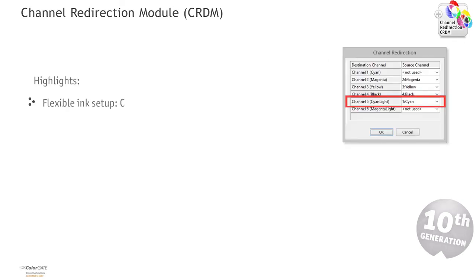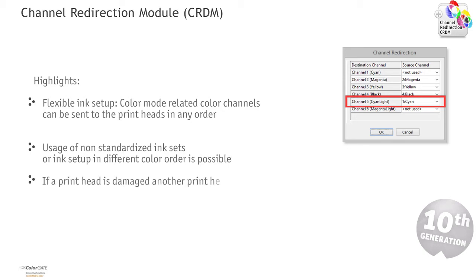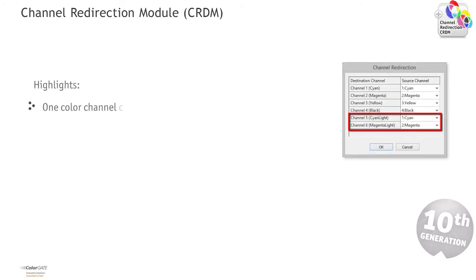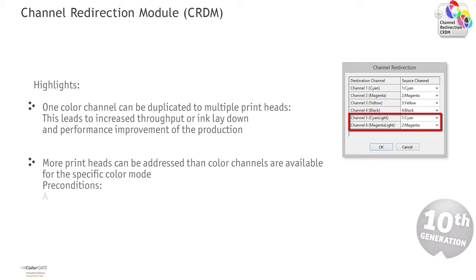On the one hand, there is the possibility of flexible ink setup: color mode related color channels can be sent to the print heads in any order. This allows the usage of non-standardized ink sets or the ink setup in different color order. Even if a print head is damaged, the Channel Redirection Module offers the comfortable possibility to use another print head without interrupting the production. Secondly, one color channel can be duplicated to multiple print heads. This feature is of particular relevance for industrial printing — it increases either the throughput or the ink lay down, consequently leading to performance improvement. When required, more print heads than color channels are available for the specific color mode can be addressed, provided the printer has the appropriate physical characteristics and driver settings.